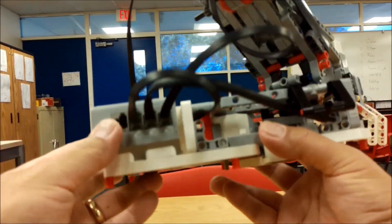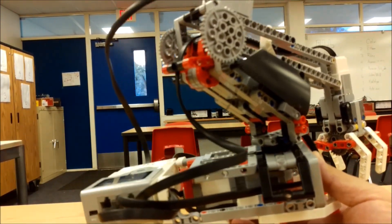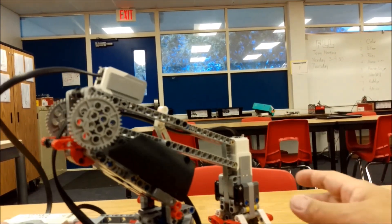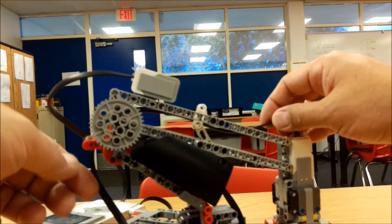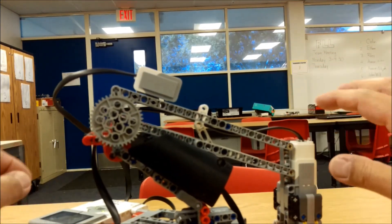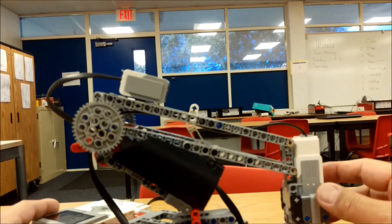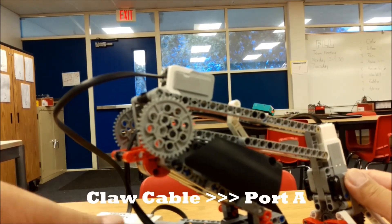This is where we'll have three cables going now. Let's start with the cable that is going to the claw here. If I follow this cable, in fact that should be your 20 inch cable. The cable that's coming from the claw, this medium motor right here. If we follow that, that one's going to go into port A.